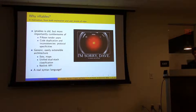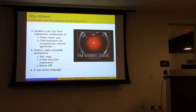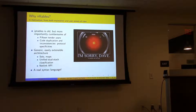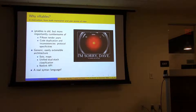Iptables is old — it dates way back to the 2.4 kernel series. Back then, IPv6 wasn't really prevalent. There were other network items that weren't prevalent at the time, and now they exist. We have dual-stack IPv6 on some networks like Comcast. We have more complicated NAT rules and filtering. It was designed in a different era when things were simpler.